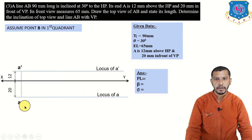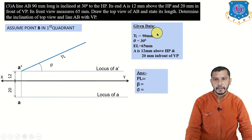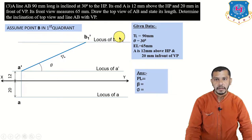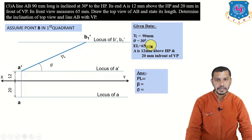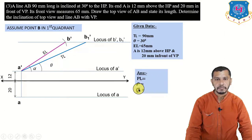Now use the given data: true length, theta, and elevation. True length is 90 mm and theta is 30 degrees, so from A-dash draw a line inclined at theta of 30 degrees with length 90 mm — this gives B1-dash. Draw the locus of B1-dash, which is also the locus of B-dash. Elevation length is 65 mm: take center at A-dash and give an arc on the locus of B-dash — here we get B-dash. Connect B-dash to A-dash to get the elevation and angle alpha.